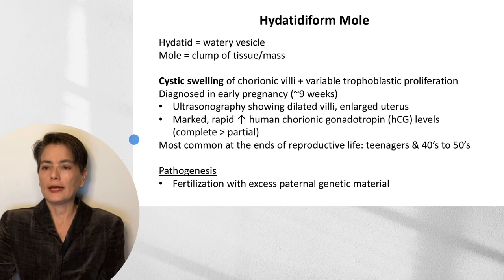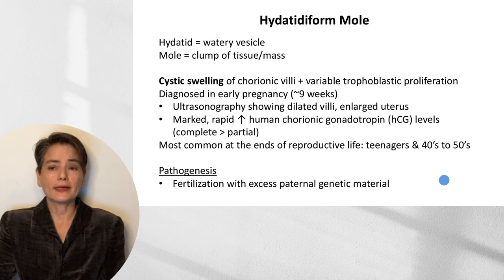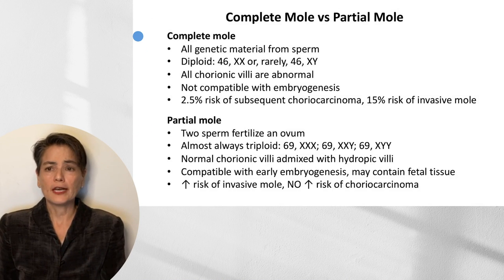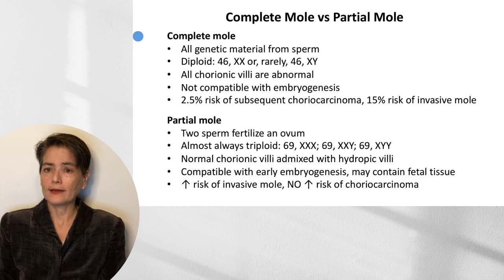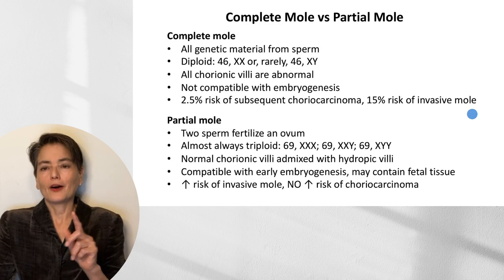While hydatidiform mole can occur at any point during the reproductive lifetime, it is more common at the extremes — in teenagers and in people in their 40s to 50s. The pathogenesis involves fertilization with excess paternal genetic material. In a complete mole, all genetic material comes from the sperm with none from the egg. Complete moles are diploid, usually 46XX. All chorionic villi are abnormal, and this is not compatible with embryogenesis. An important characteristic of complete moles is an increased risk of subsequent choriocarcinoma as well as invasive mole.